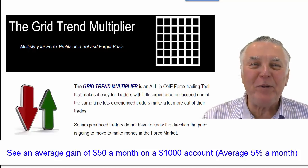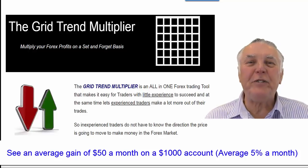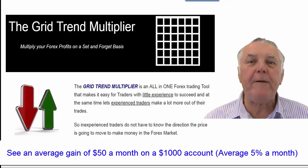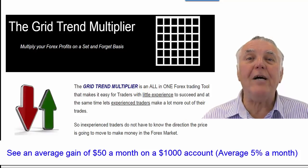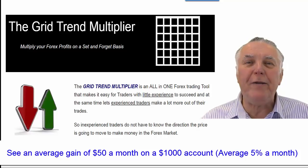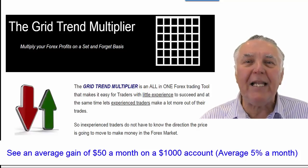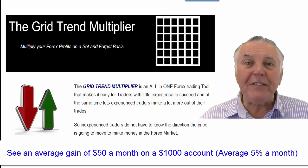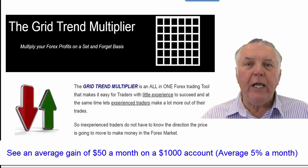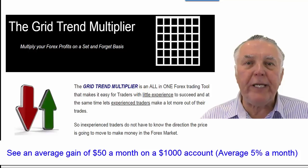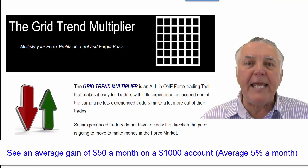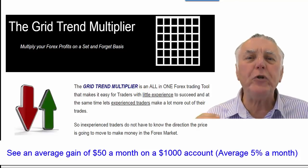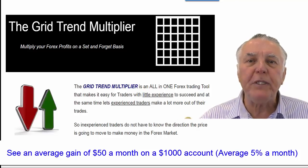Hi everybody, Alex Deploy here from Expert Forex. In today's video I want to talk to you about the Grid Trend Multiplier. The Grid Trend Multiplier allows beginner traders to buy and sell a currency and still make a lot of money. It also allows experienced traders, if they know the direction of a trend, to multiply their gains when trading that particular trend. So it's a great multi-purpose EA.